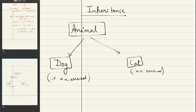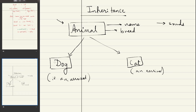If it's an animal, it is going to have a name, a breed, and every animal would have some sounds — animals communicate through sounds. But in the case of a dog, dogs usually bark, while a cat is going to meow. There are different sounds for different animals. The common properties can be listed in the parent class, and whatever special or unique properties are specific to a dog or a cat can be listed in that particular child class.